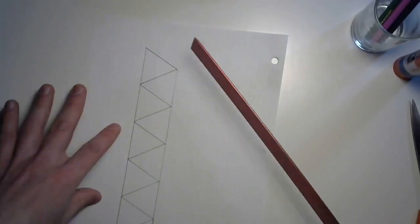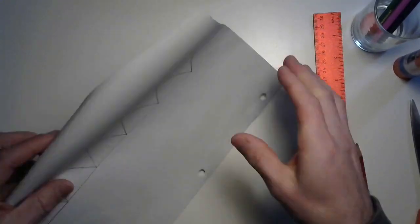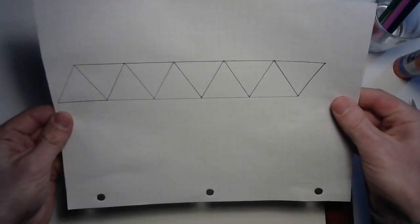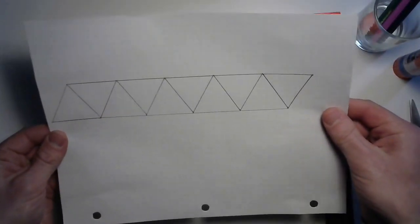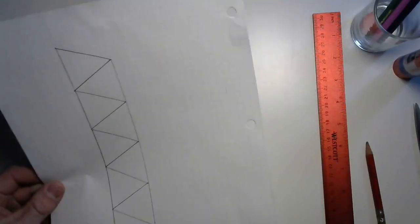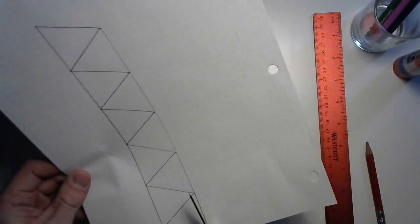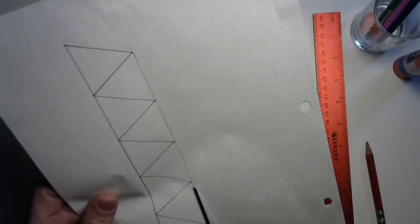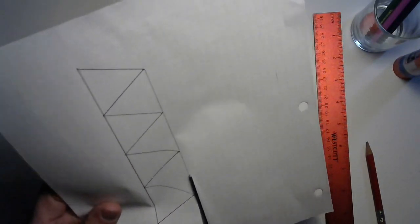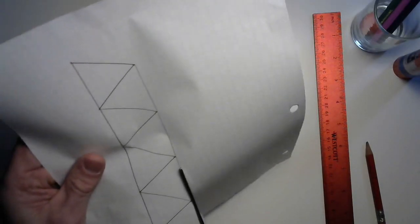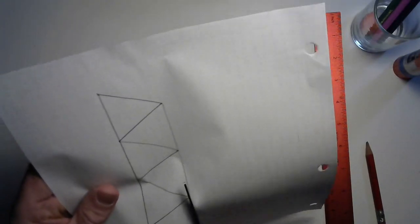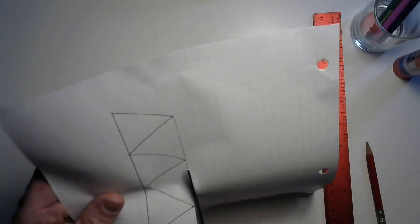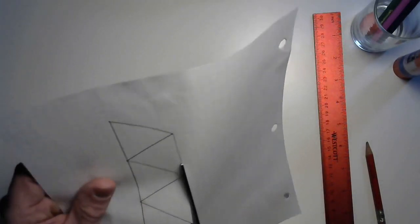And stop right there. Fantastic, look at that beautiful set of triangles. Okay, the next step is to cut this out, so get a pair of scissors and go ahead and cut that out. Make sure to cut carefully along your lines, and don't cut the triangles out, just cut along the outside line of the whole strip of triangles.